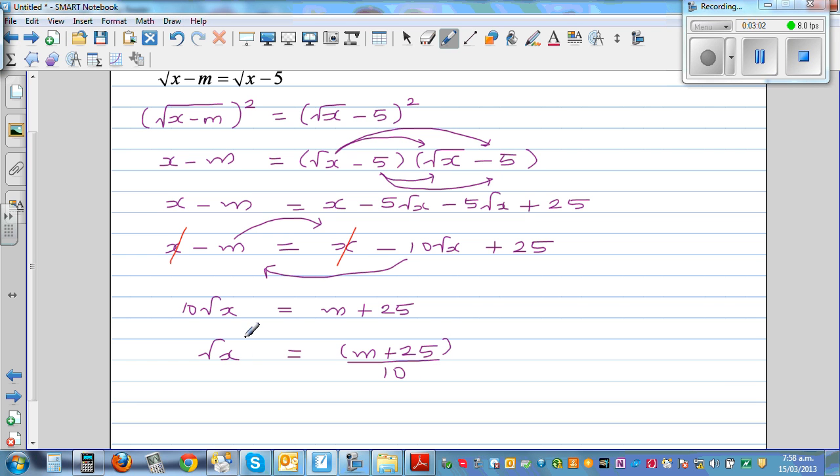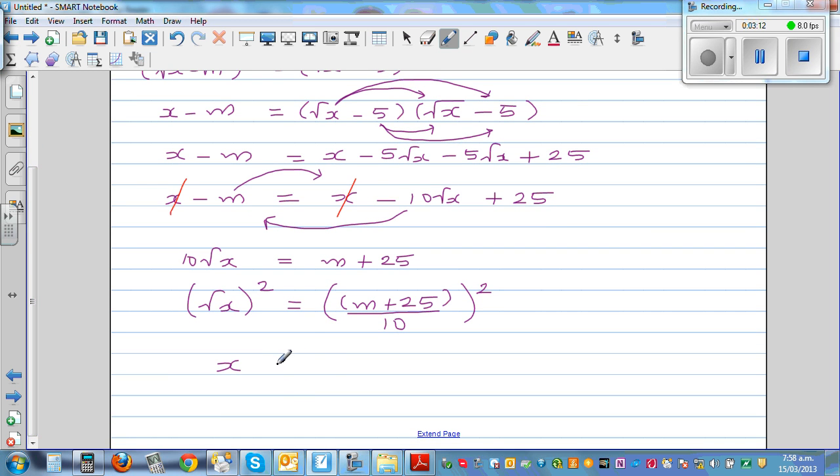Now I want to find x, so what should I do? I should square this side, so I'd also square this side. So this is x = (m + 25)²/100. And this is your final answer.